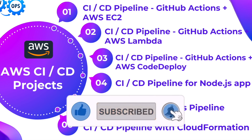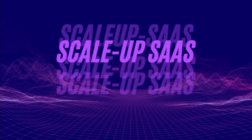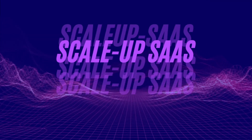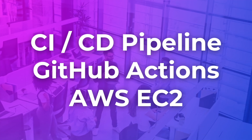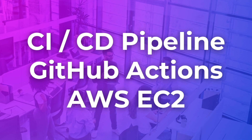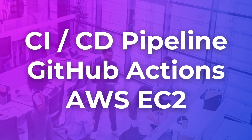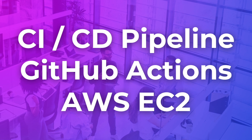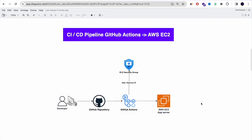So subscribe now so you won't miss a thing. Welcome back guys, and thank you for keep watching. So let's start with our first cloud project with CI/CD pipeline, with GitHub Actions to AWS EC2 instance. This is the first level, the beginner level of CI/CD pipeline with the DevOps focus.